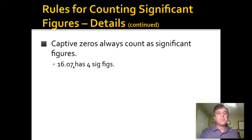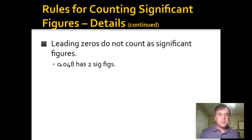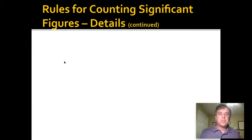The number 16.07: the one, the six, the zero, and the seven are significant. It has four significant figures. That means that we've read this measurement all the way down to the hundredths place. Let me go back to the leading zeros part—these zeros here are just placeholders. If you had written this number in scientific notation, that would be 4.8 times 10 to the negative two. It would just have the two significant figures, the four and the eight. Those two zeros there are just placeholders.